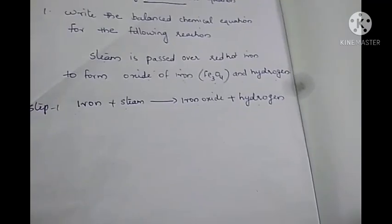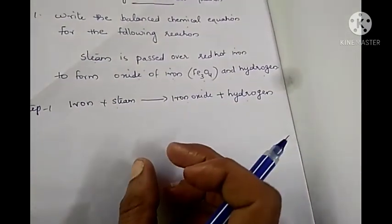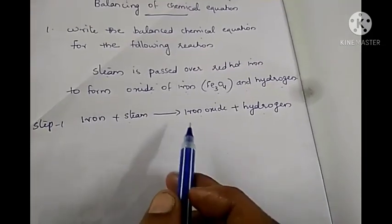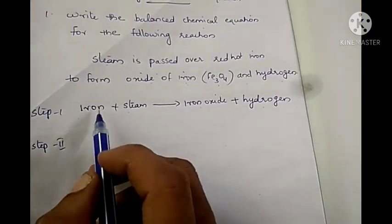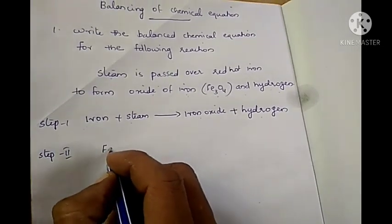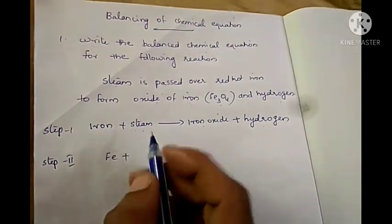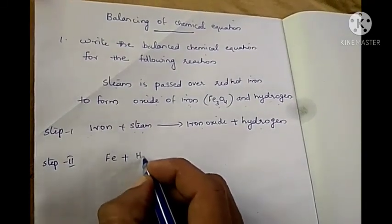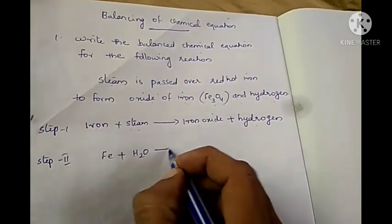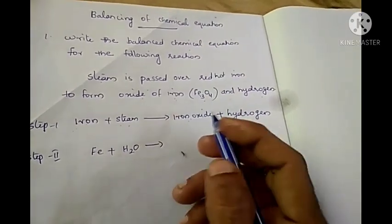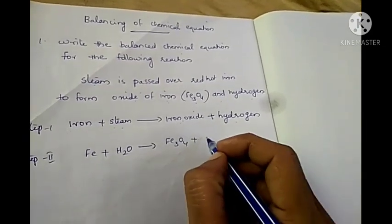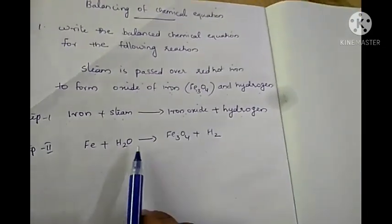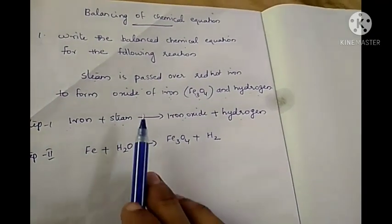Step 2: We have to convert this word equation into a chemical equation using the symbols and formulae of reactants and products. The symbol of iron is Fe. Steam is the gaseous form of water, so its formula is H2O. H2O gives iron oxide — its formula is given in the question as Fe3O4 — plus hydrogen, H2. This is the skeletal equation of the given chemical reaction.